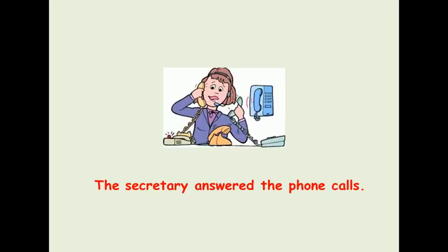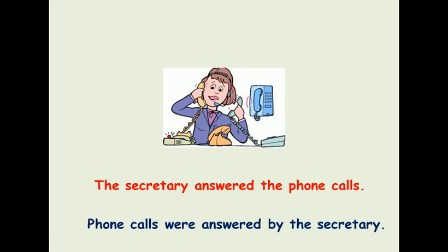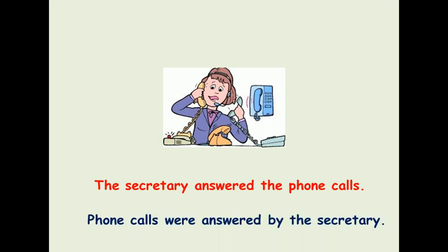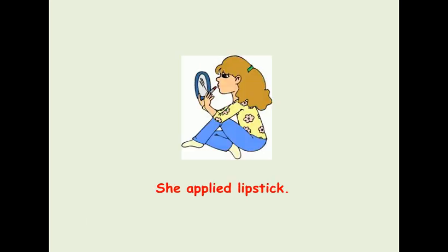'The secretary answered' — 'answered' is conjugated in the past, so we automatically conjugate the verb 'to be' in the past. It becomes: 'Phone calls were answered by the secretary.' Next: 'She applied lipstick' — 'applied' is in the past, so: 'Lipstick was applied.'